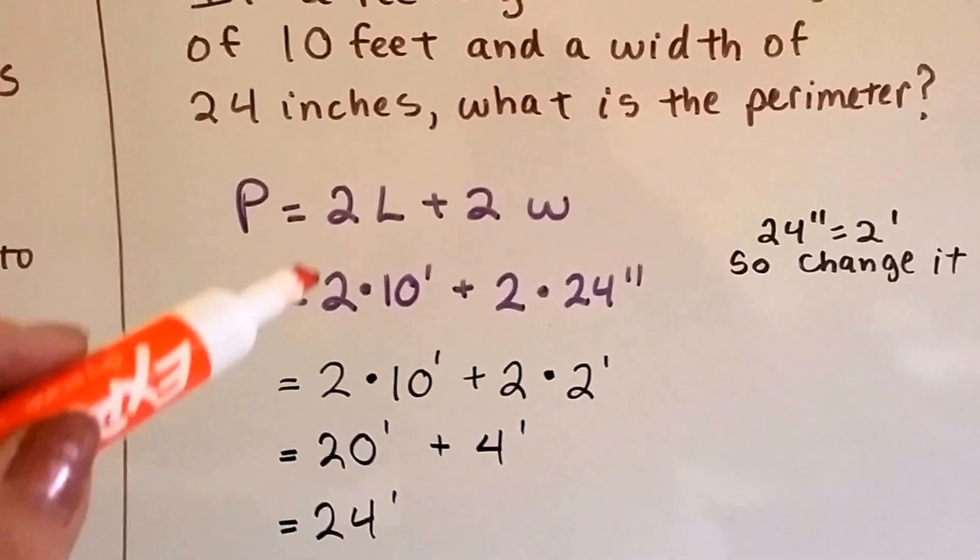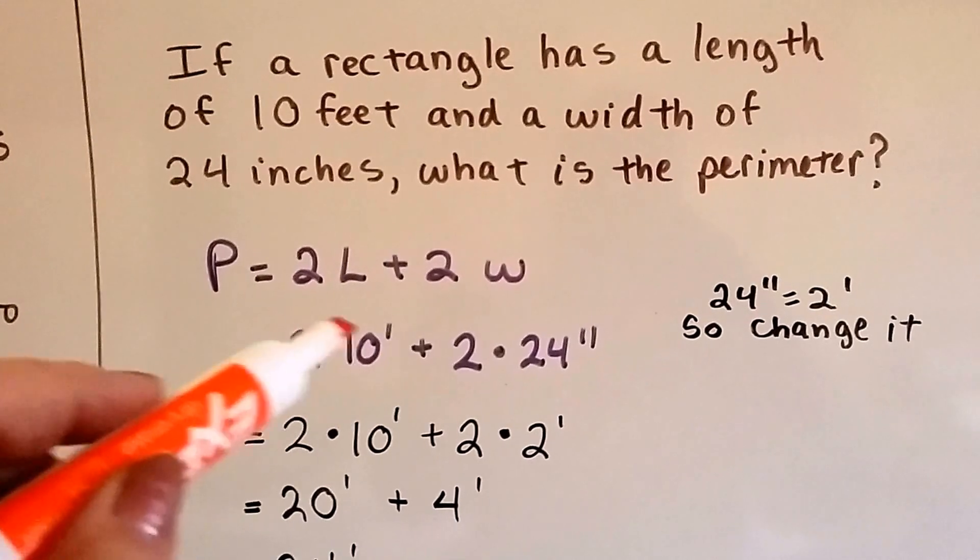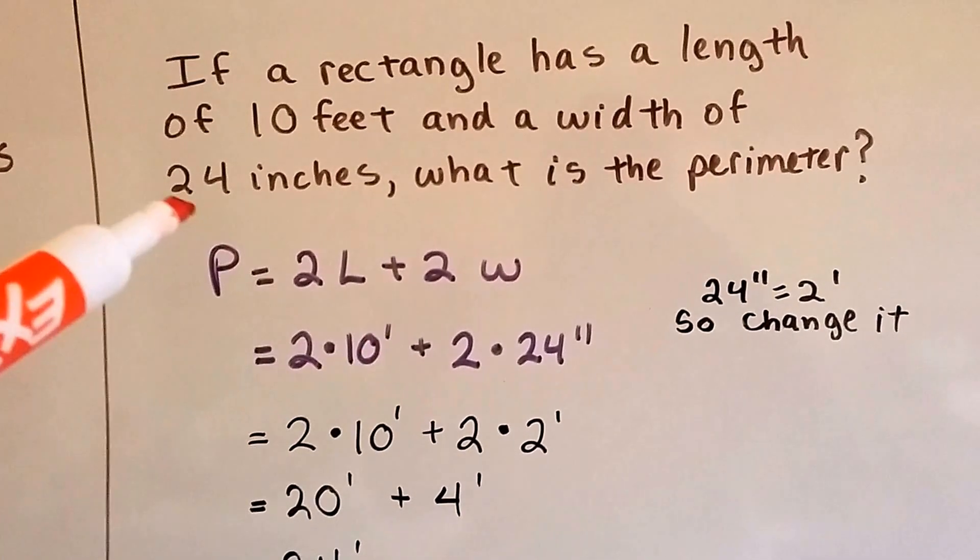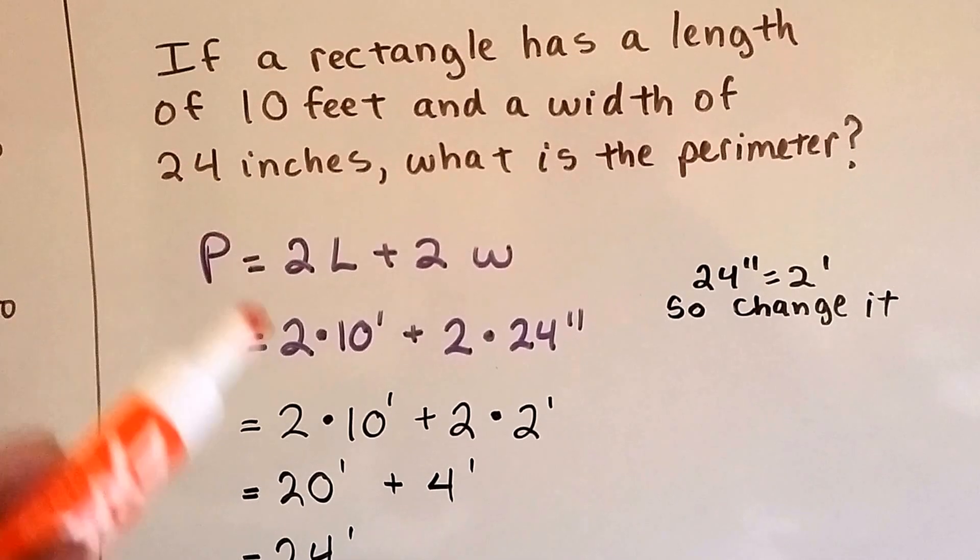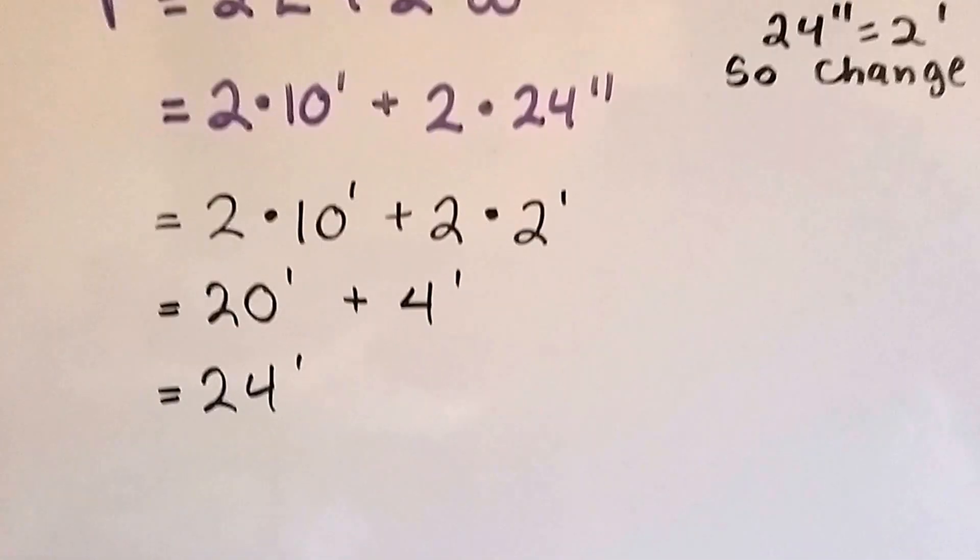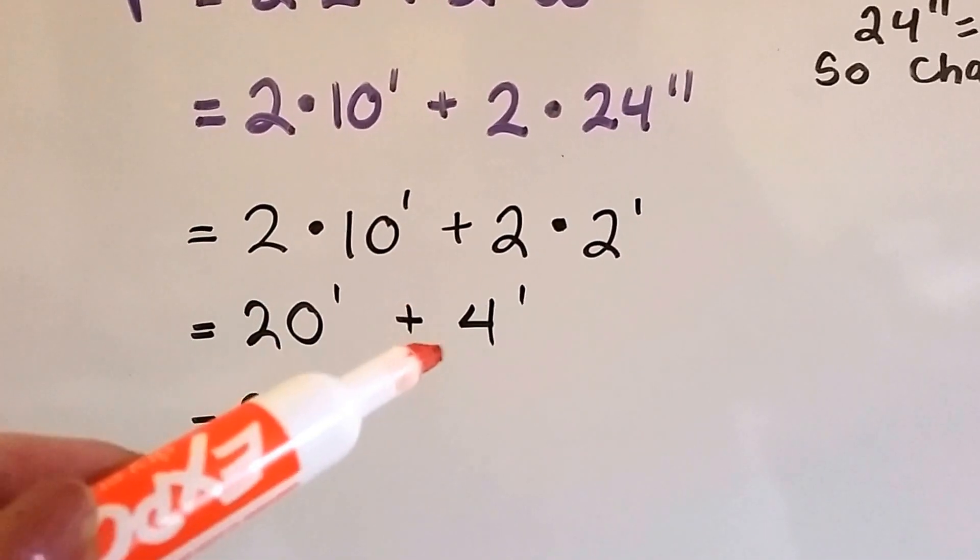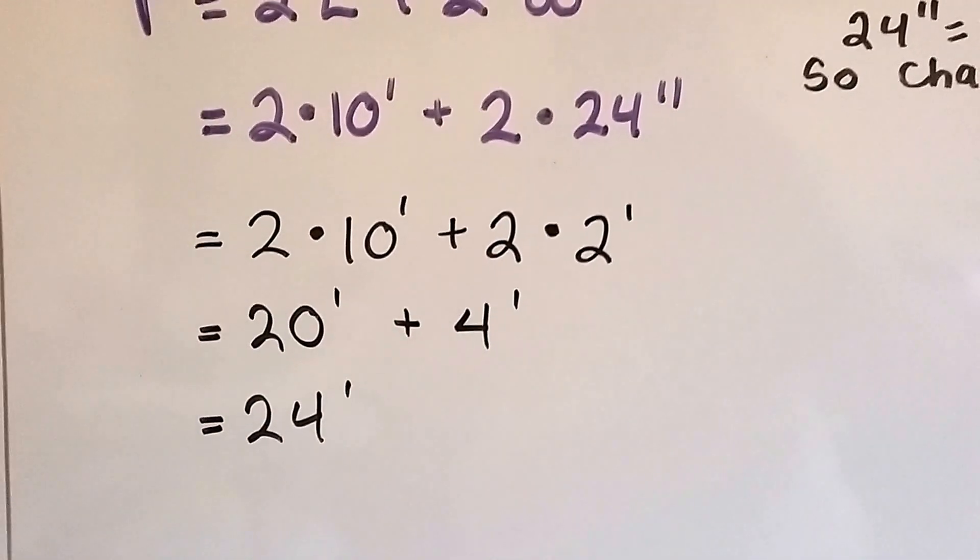So now we've got the length is 10 feet. We've got 2 of those. That's 2 times 10 feet. And the width is 2 feet because we changed it from the 24 inches. So now we've got 2 times 2. All we have to do is do the math. 2 times 10 feet is 20 feet. 2 times 2 feet is 4 feet. We've got 24 feet for our perimeter.